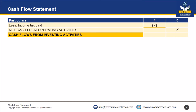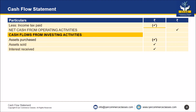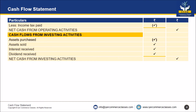Second, cash flows from investing activities: assets purchased, assets sold, interest received, dividend received. We get net cash from investing activities.